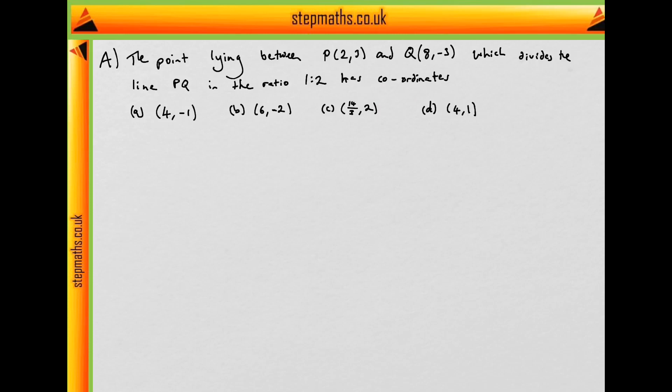Right, now let's think about this in vectors. So let's label the point P to be the point with vector (2, 3), and Q to be one with (8, -3).